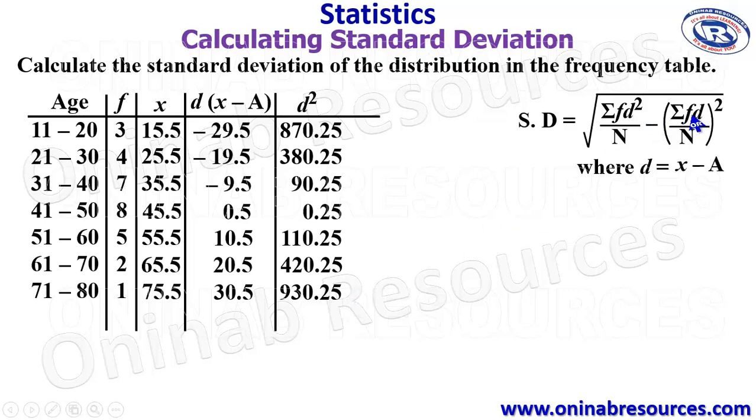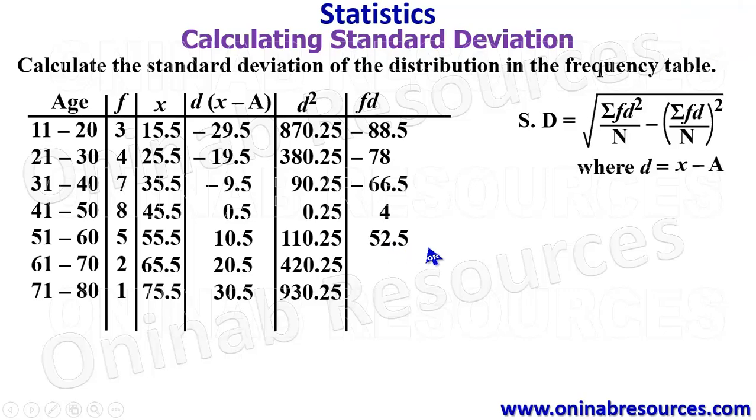We then go ahead to get our fd and fd squared. So we'll start with fd, which means the frequency times d. So 3 times negative 29.5 gives negative 88.5. 4 times negative 19.5 gives negative 78. 7 times negative 9.5 gives negative 66.5. 8 times 0.5 gives 4. 5 times 10.5 gives 52.5. 2 times 20.5 gives 41. And 1 times 30.5 gives 30.5.